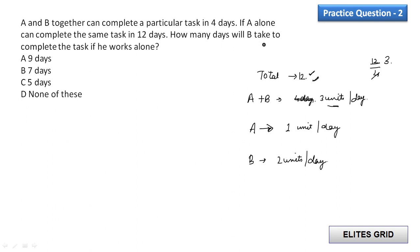Now how many days will B take to complete the task if he works alone? Now if B works alone so it simply means that 2 units per day will be there. Total number of units are 12. So it will be equal to B will be equal to 12 divided by 2. That is total work divided by number of units covered by B in 1 day.